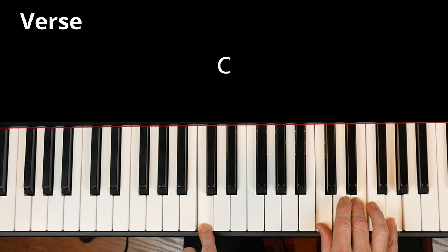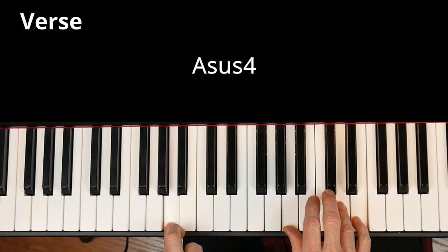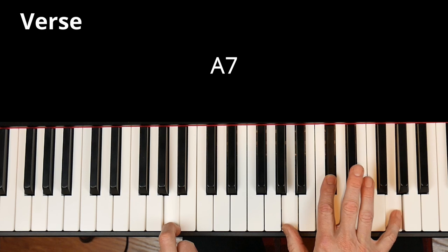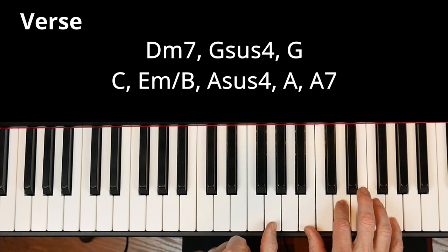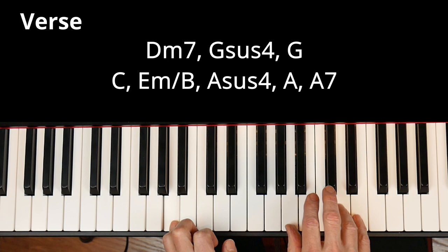So C, E minor with a B in the bass, A sus, A. And then on that last beat, we throw in the 7th. So from the top, we face the music together, G. And throw our hats in the ring.